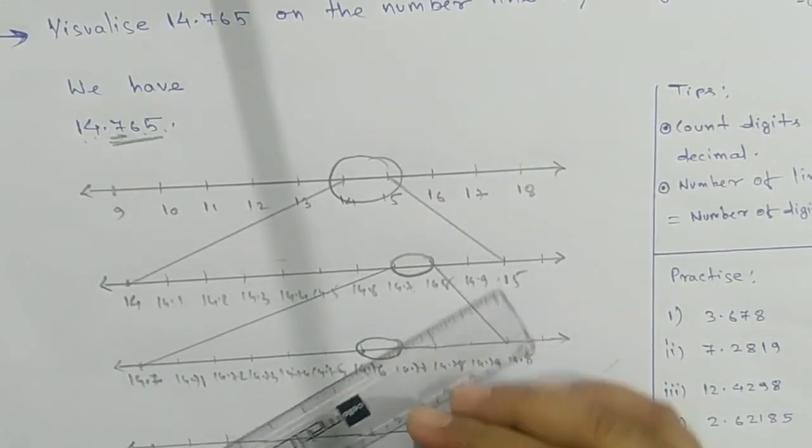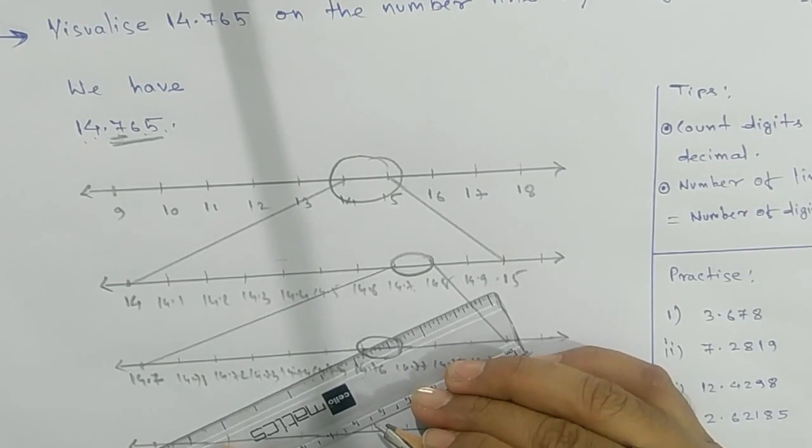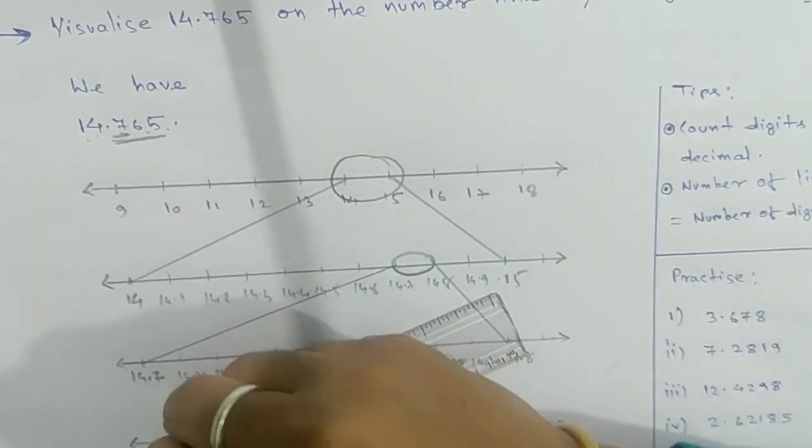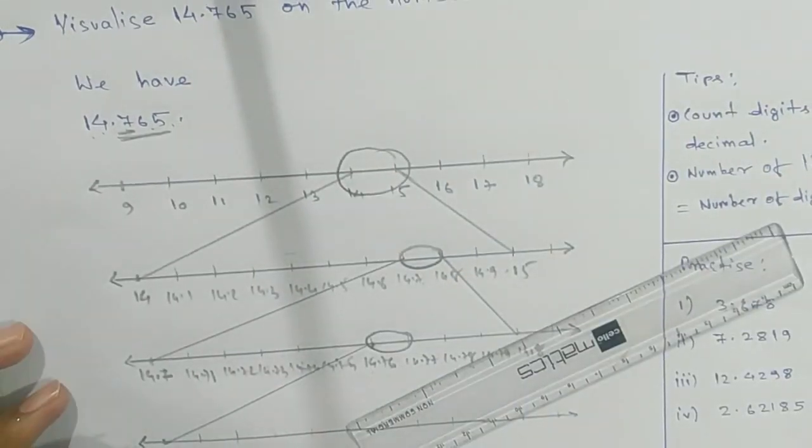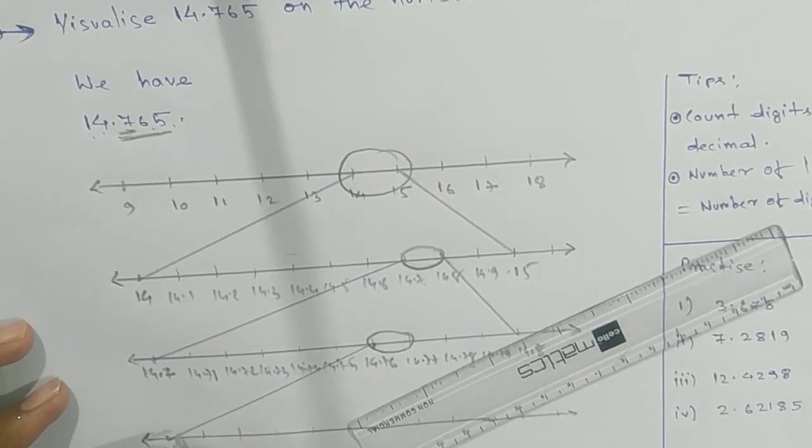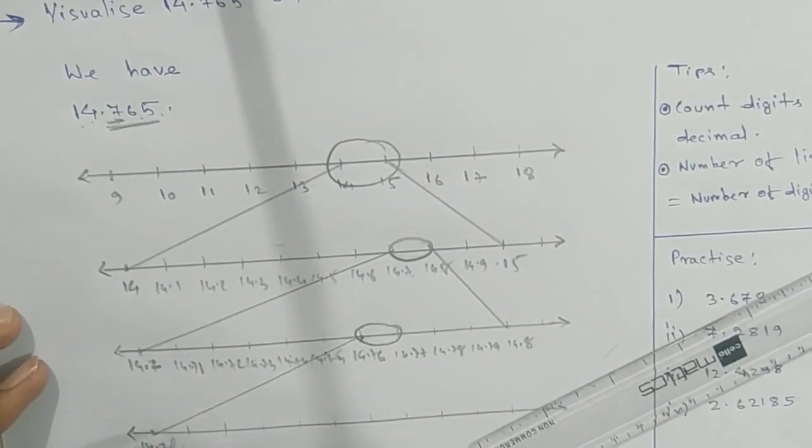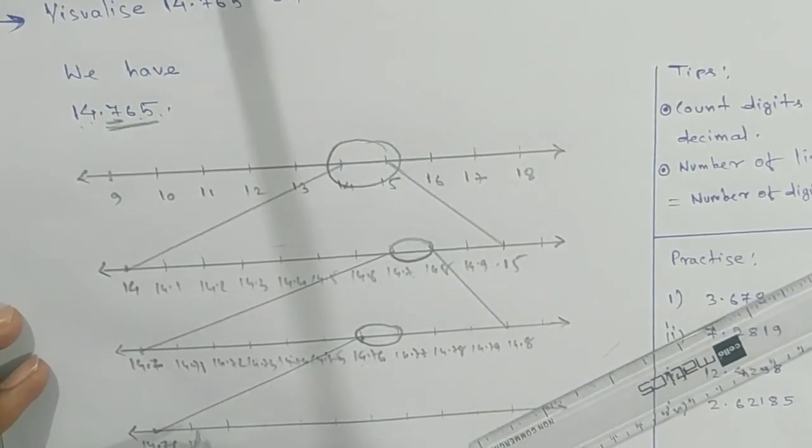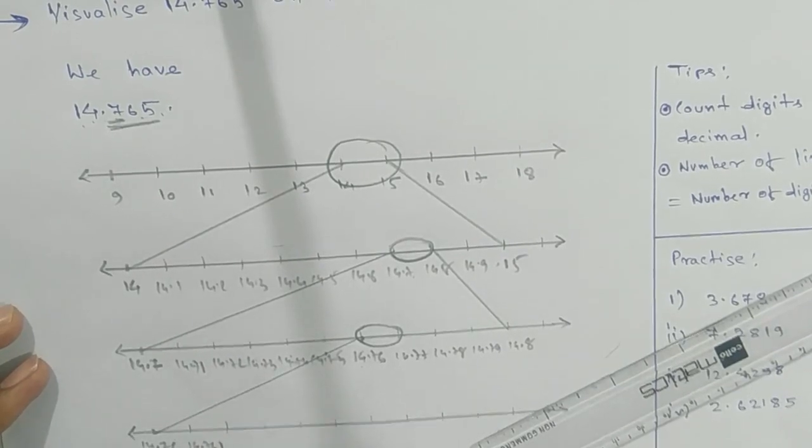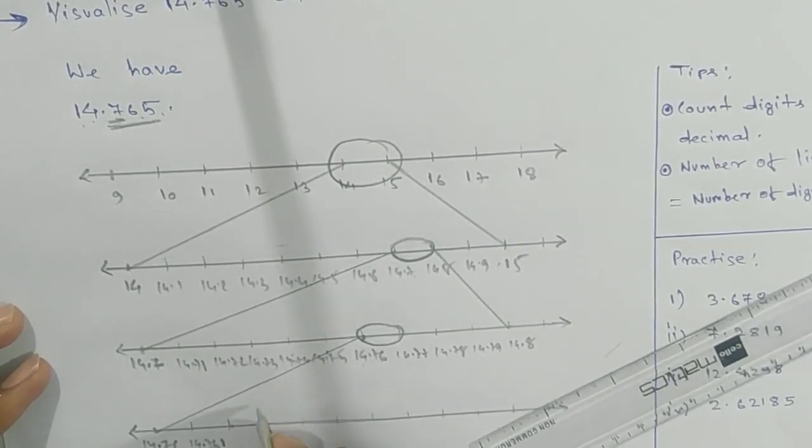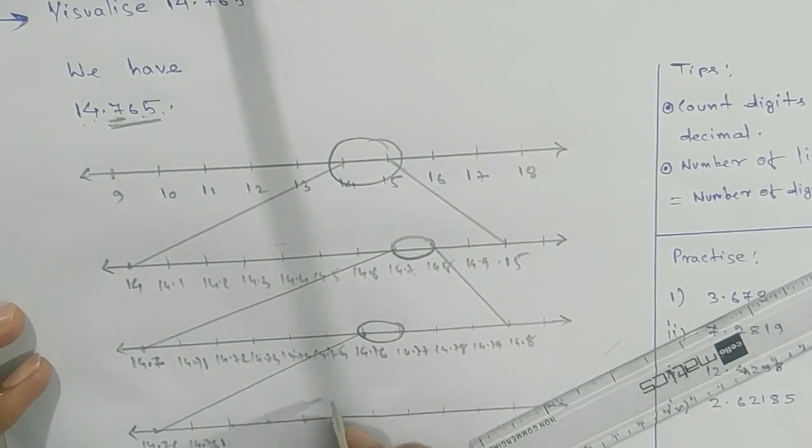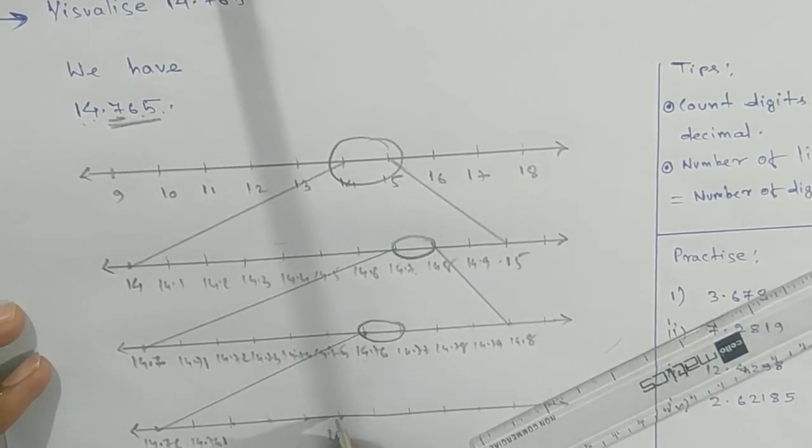To magnify this part, you have to take this one. This will be your number. 14.76, and count: one, two, three, four, five. This will be your required answer, 14.765.